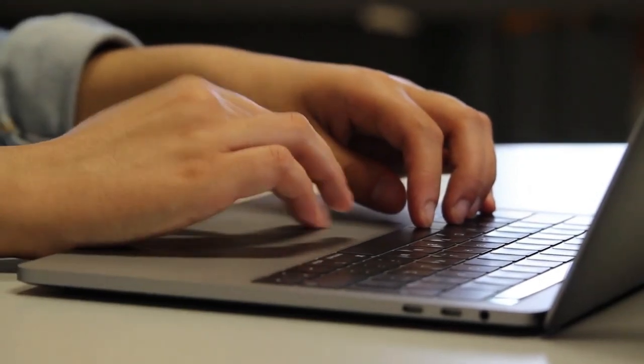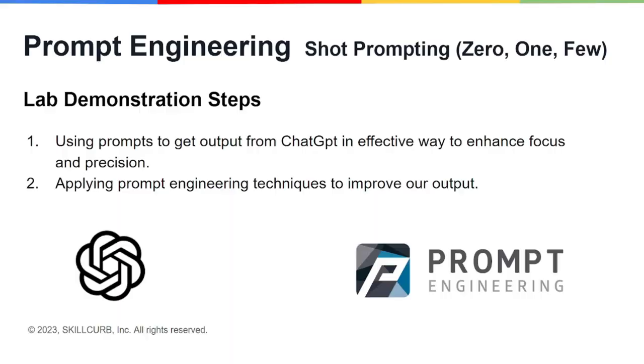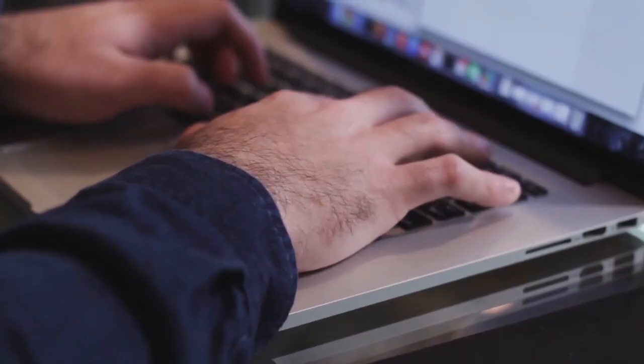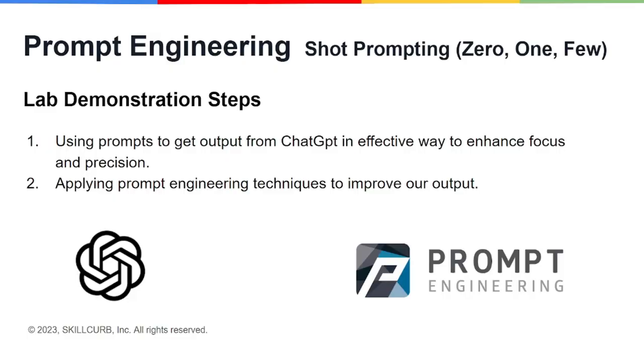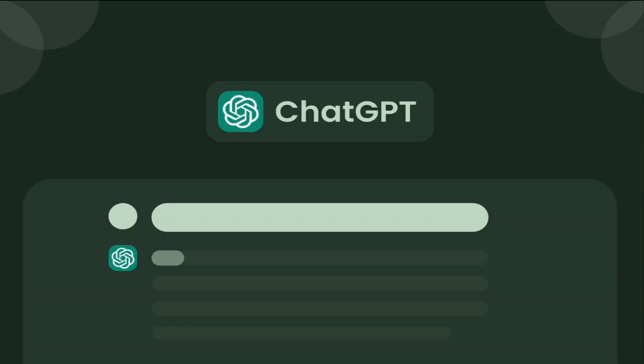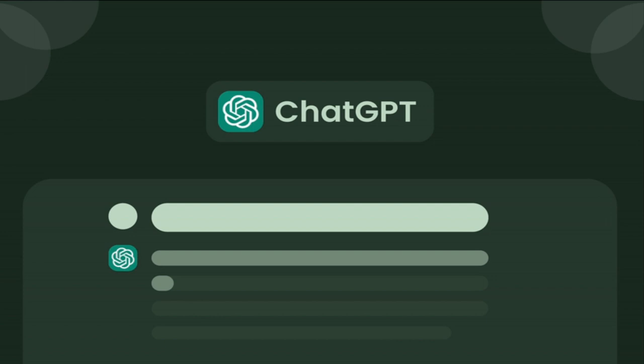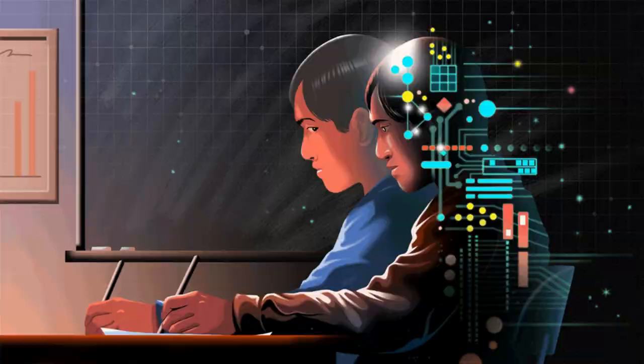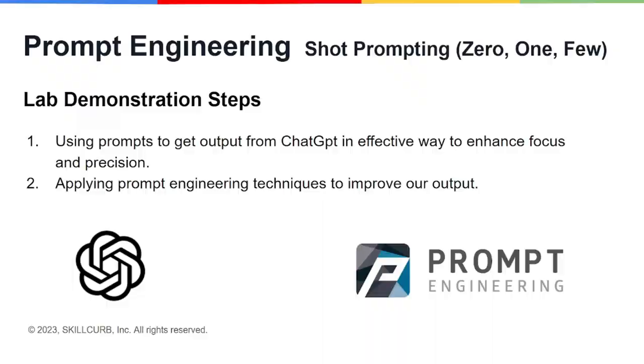Hey guys, welcome back to another video of the prompt engineering course. In this video we'll be discussing a type of prompt engineering known as shot prompting — which includes zero shot prompting, one shot prompting, and few shot prompting. We'll be using prompts to get output from ChatGPT in an effective way to enhance focus and precision of our output.